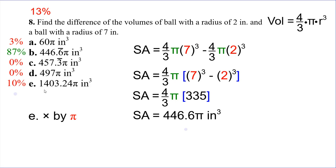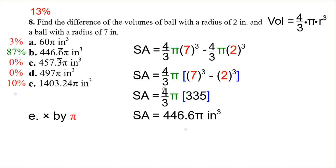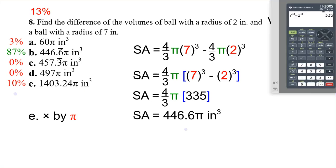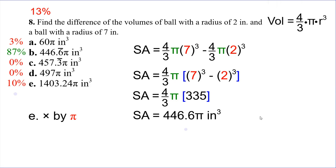Most of you guys got that right — very good. On answer E, the mistake was that you multiplied by pi again. So instead of leaving it in terms of pi, you went ahead and multiplied by pi. But notice our answer has pi in it as well. So we need to leave it in terms of pi — you don't actually multiply the pi in, you just multiply the four-thirds. That gives us 446.6 repeating. In general, when you see a pi in there, just leave it out of the calculator and put it in at the end. It's like we're factoring it out until the very end.